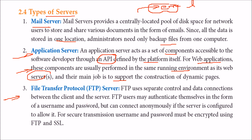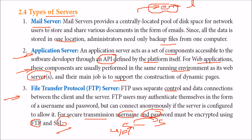FTP — File Transfer Protocol — is used when you want to send and receive large files. It uses a separate control and data connection between client and server. FTP users may authenticate themselves with a username and password, or connect anonymously. For secure transmission, a username and password along with SSL — Secure Socket Layer — are used.